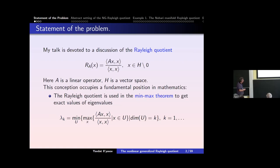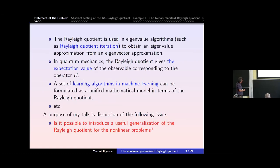Of course, under some conditions for the obvious elements. Moreover, the Rayleigh quotient is used in algorithms such as the Rayleigh quotient iteration to obtain an approximation for the eigenvector. In quantum mechanics, the Rayleigh quotient gives the expression value of the observable corresponding to the operator H. Investigation shows that a set of learning algorithms in machine learning can be formulated as a unified mathematical model in terms of the Rayleigh quotient, and so on — a lot of applications.